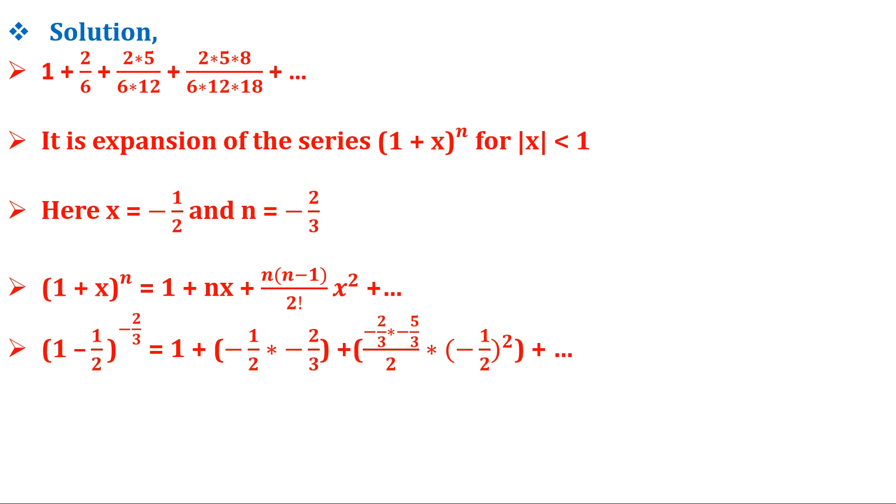On solving we get 2 into 5 by 6 into 12 and so on. Therefore we get the sum as (1 by 2) raised to minus 2 by 3 which is equal to 4 raised to 1 by 3.